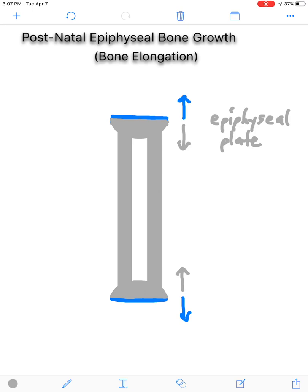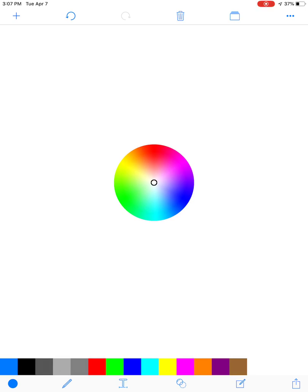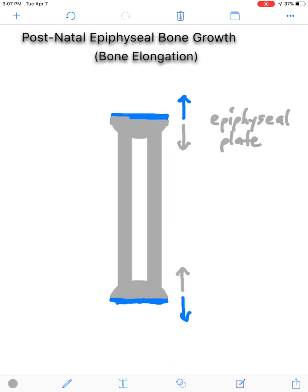So, this process continues time and time again, where you have new cartilage being added, and then the old cartilage will become bone. And this whole process will start early on in childhood and will continue throughout life up until puberty. And at puberty, that is when this process will conclude and the person is at their maximum height.